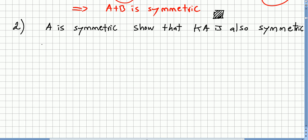So a second proof we are asked is, if A is symmetric, show that kA is also symmetric. We just follow the definition, this is really easy.